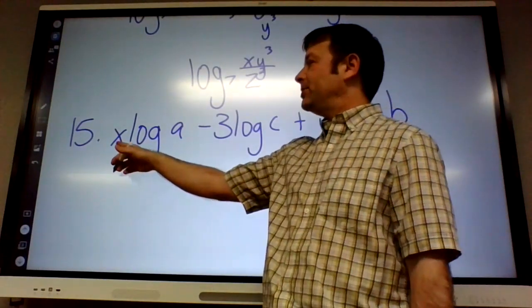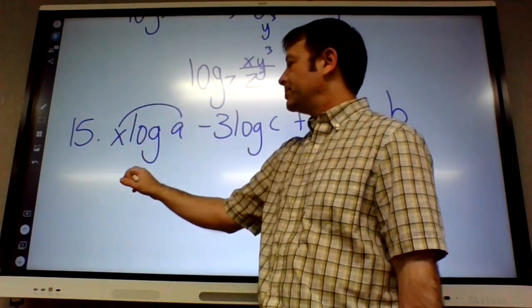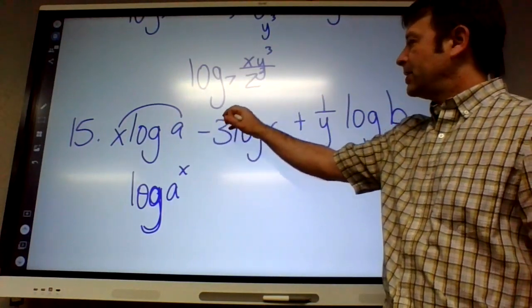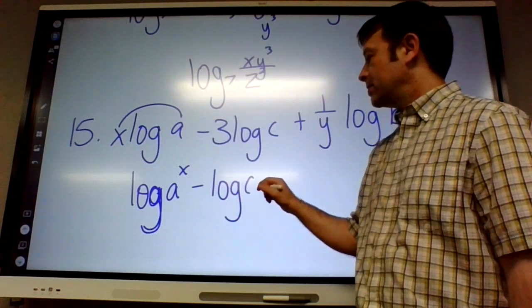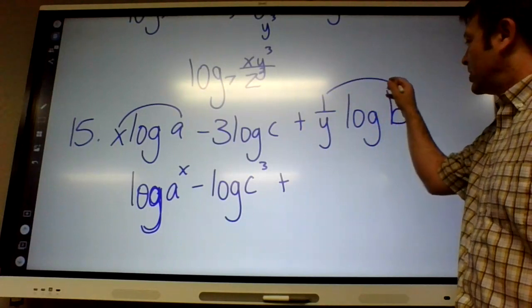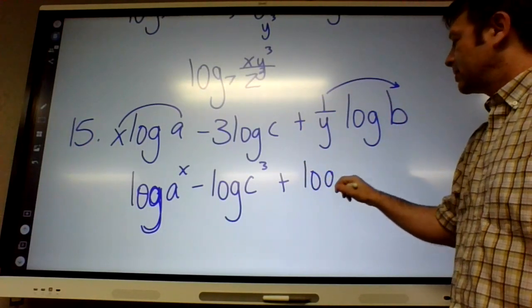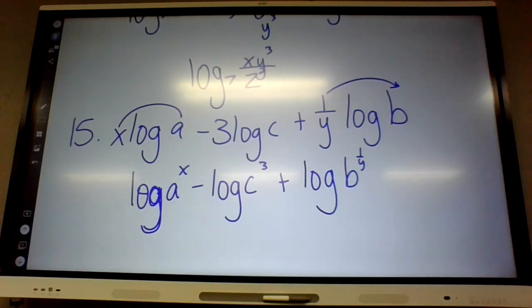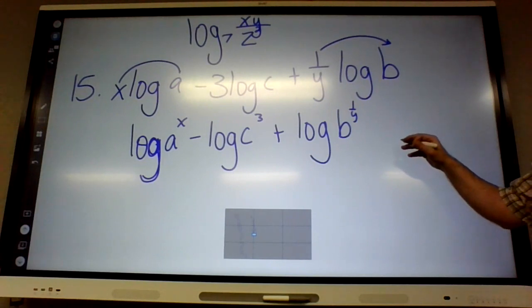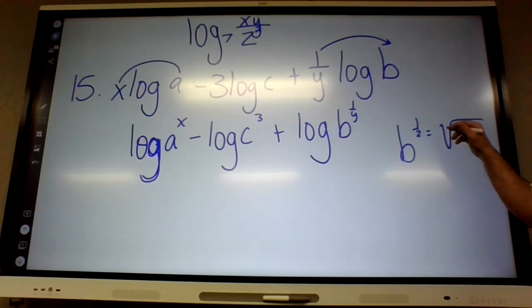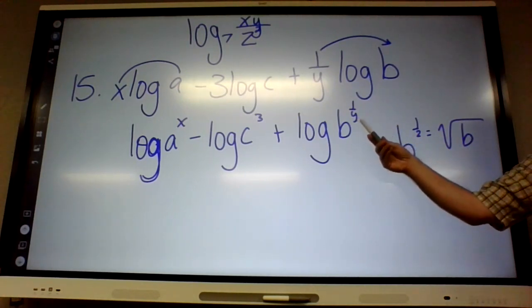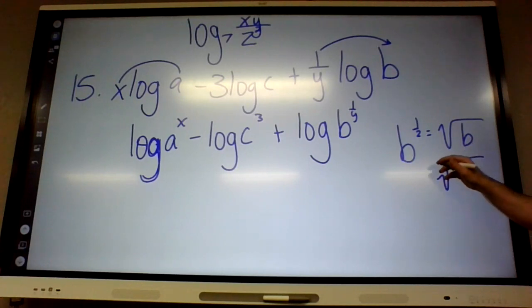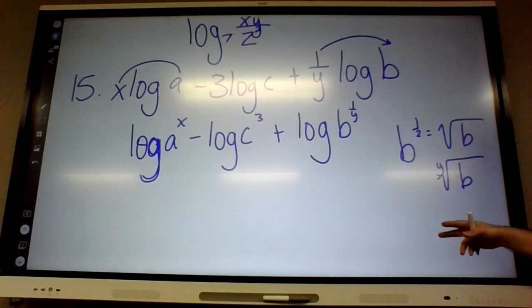This last one is hard. What do you guys think I'm going to do with the first term here? X is going to go up. So log of a to the x. And then 3 is going to go up. This is where it gets weird. So 1 over y is going to go up. You remember how the one half power meant like the square root of b? So this means the y root of b. So it's kind of like that, but you put a little y right there. So that one's kind of weird.